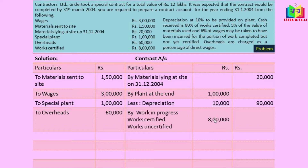Work certified is 8 lakh. The information was given to calculate works uncertified — that is 5% of the value of material used and 6% of wages — and overheads are charged as a percentage of wages. Using this information we will calculate the works uncertified.